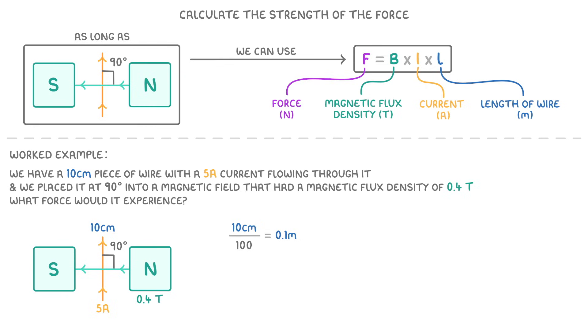Then all we need to do is plug all of our values into the equation, so 0.4 times 5 times 0.1, which gives us 0.2 newtons.